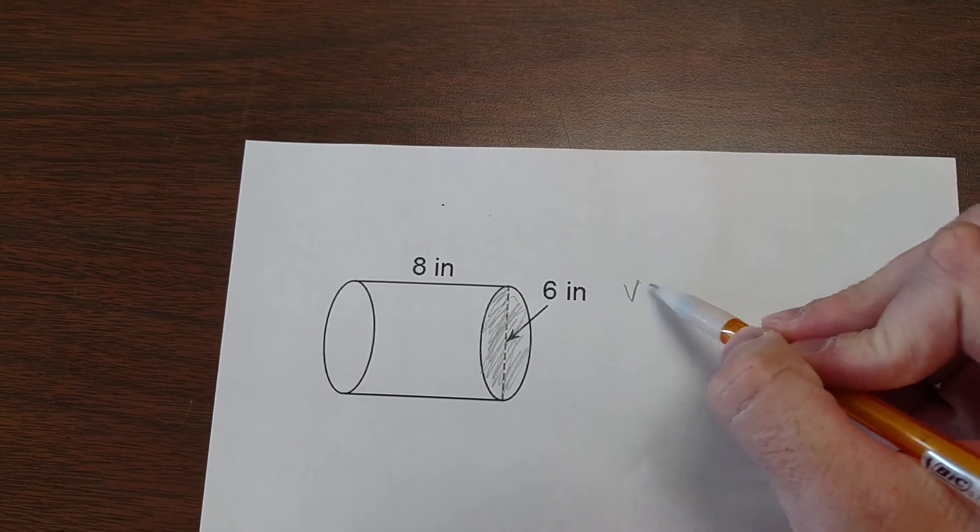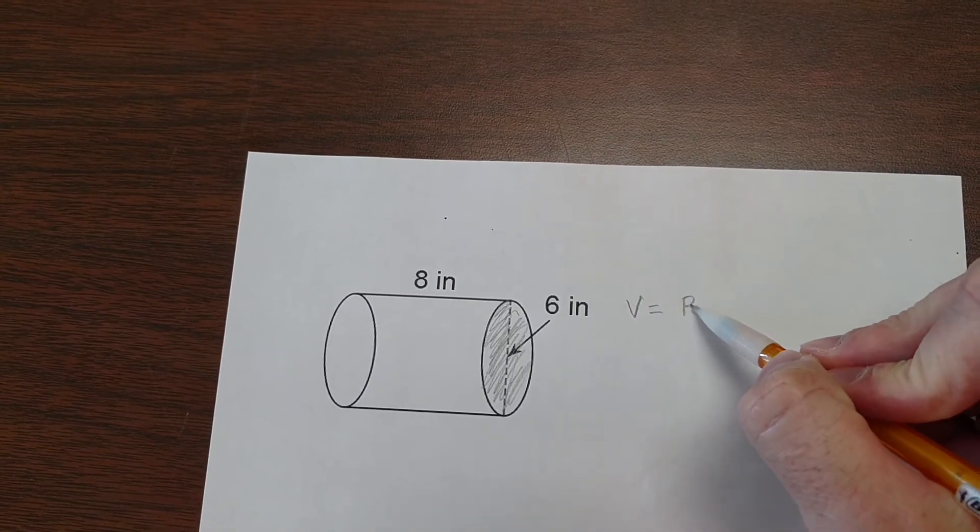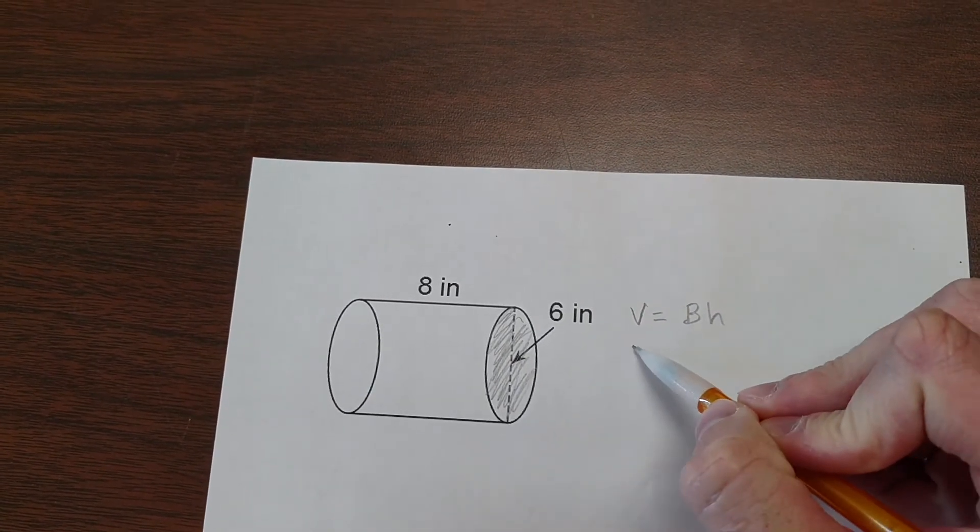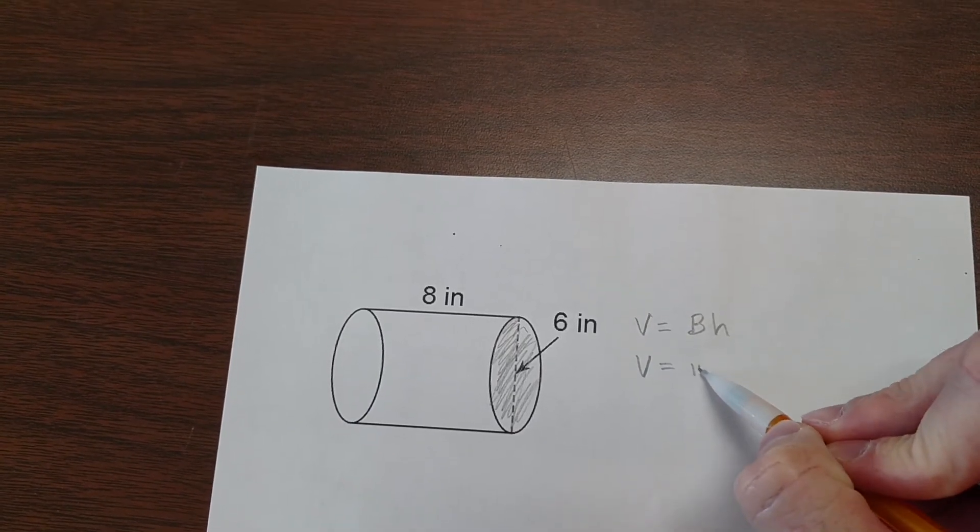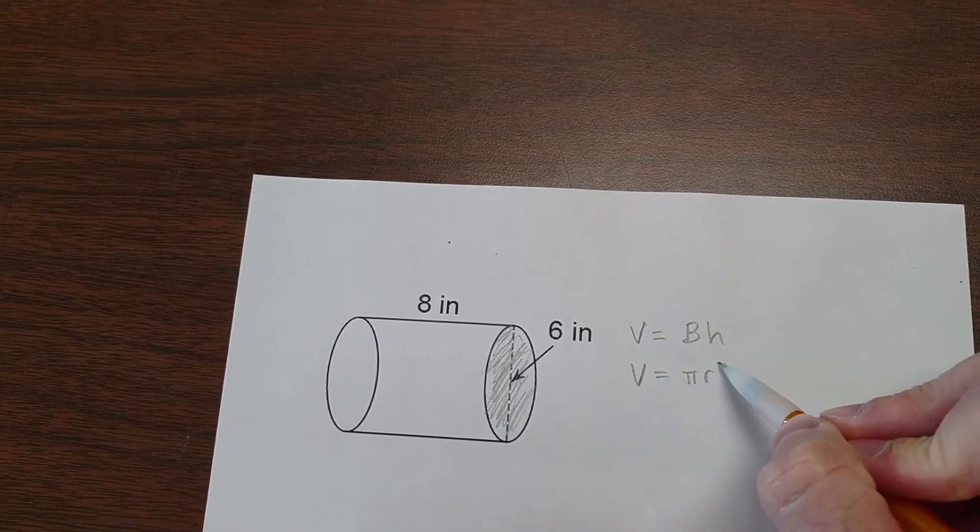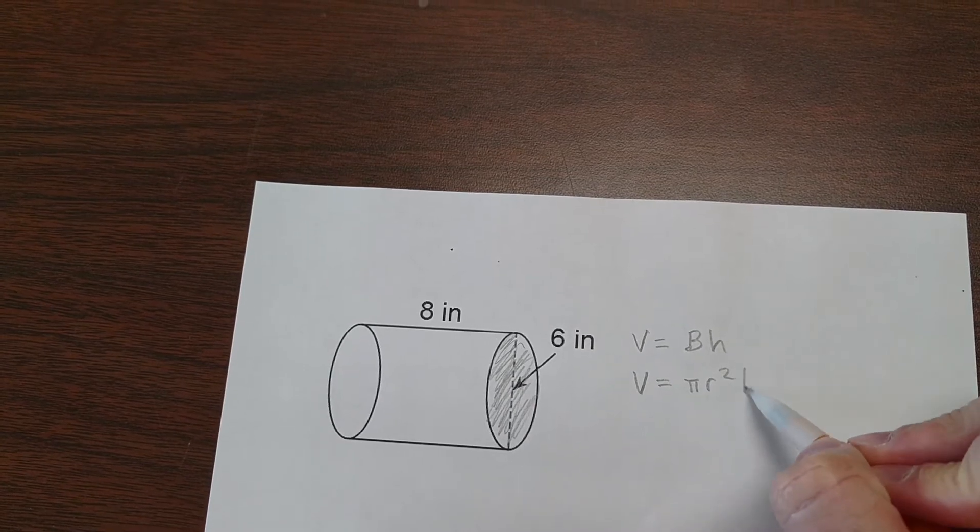So our formula for volume is still volume equals area of the base times the height. Or since the base is a circle, the area of a circle is pi times the radius squared times the height.